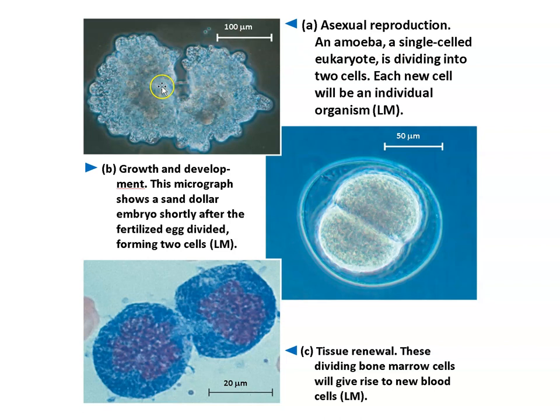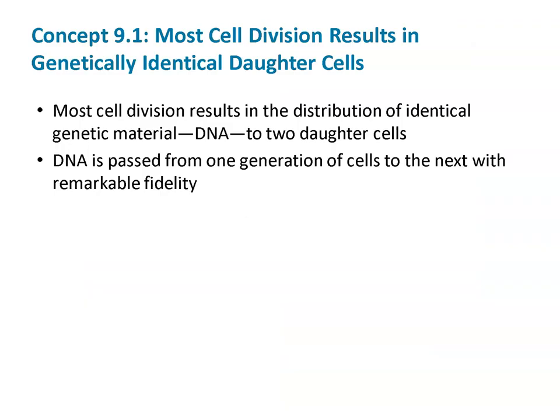Here's asexual reproduction in an amoeba — a single-cell eukaryote dividing into two. Here's growth and development: a sand dollar embryo shortly after the fertilized egg divided. And tissue renewal: these dividing bone marrow cells will give rise to new blood cells. Your blood literally comes from your skeletal system. Bone cells early on give rise eventually through a lot of differentiation to mature red blood cells.